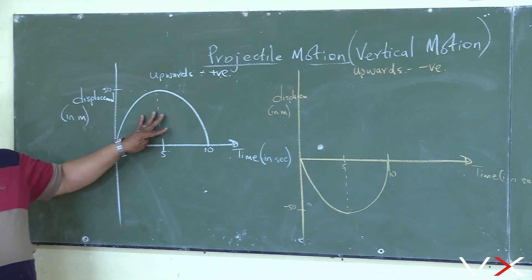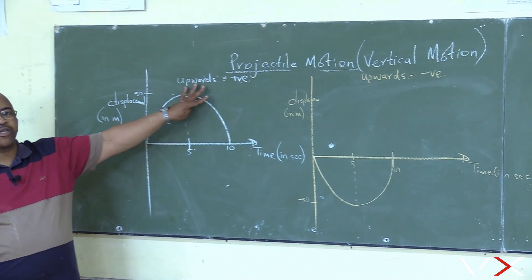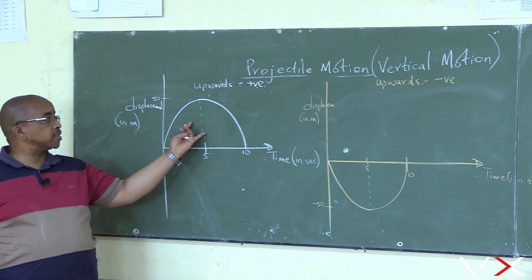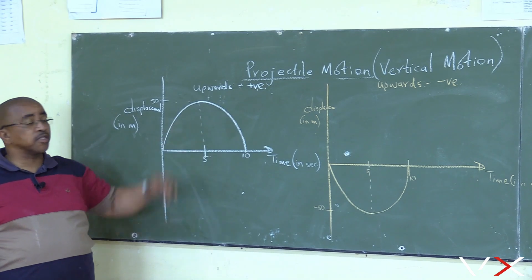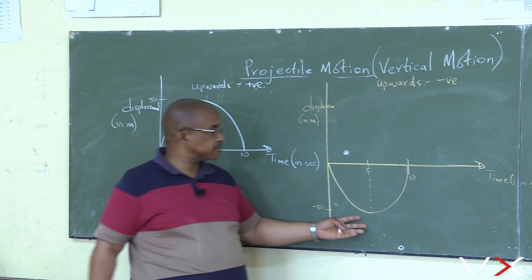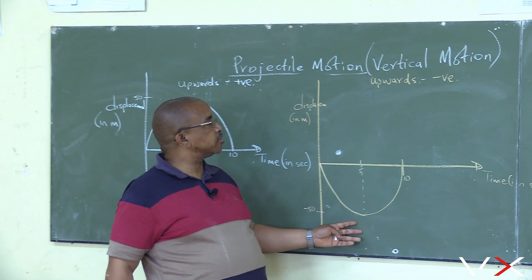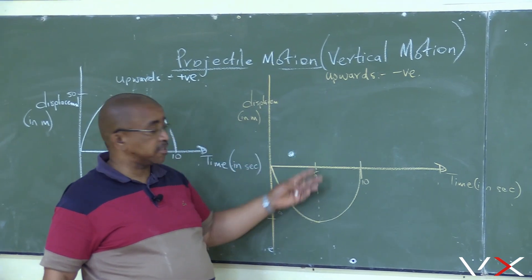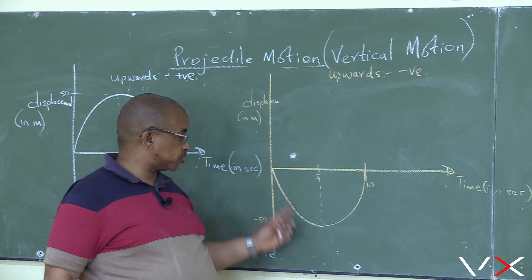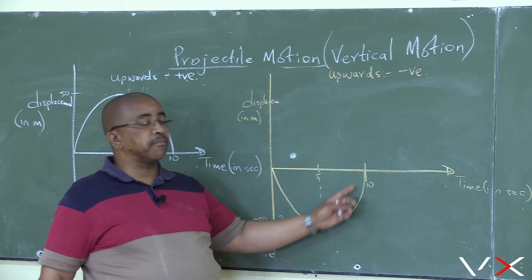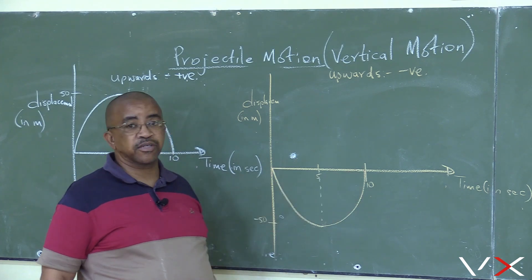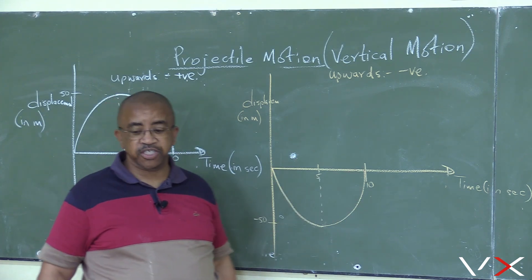The object — where upwards is positive, we take upwards as positive. Obviously if upwards is positive, downwards is negative. This is the displacement-time curve where we take upwards as negative. From 0 to minus 50, then displacement returns to zero. So we have something of this nature.